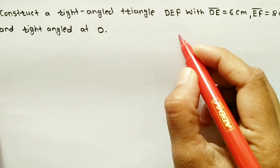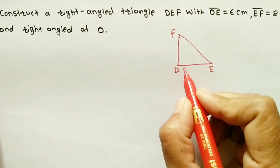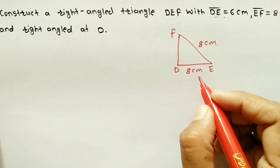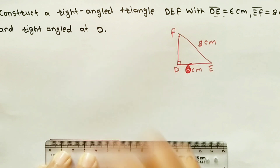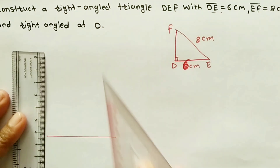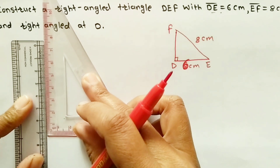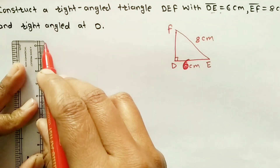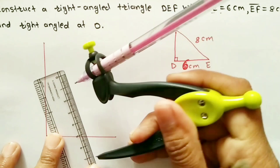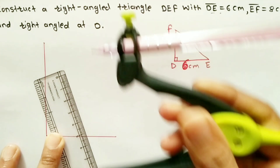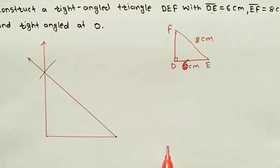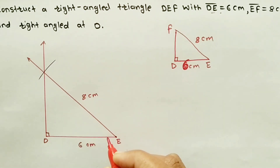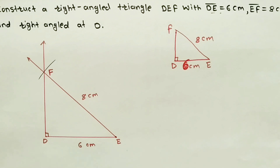The next question: construct right angle triangle DEF with DE equal to 6 cm and EF equal to 8 cm, with right angle at D. Draw a rough sketch. First draw a 6 cm line named DE. Adjust your set square carefully and draw a perpendicular line — it should not be slanted. Take compass, measure 8 cm, and mark the point of intersection. Join to complete triangle DEF as per the given measurements. That is all for today's class — if you like my videos, please like and comment.